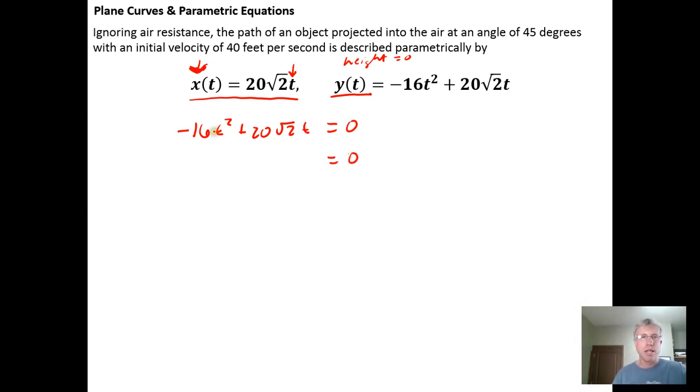Looking at this, I can factor out a negative 4. In fact, I'm going to factor out a negative 4 times T because that's a common factor in each of the two terms. And that's going to leave behind a positive 4 times T minus 5 square root of 2 times 1, because it factored the T out.